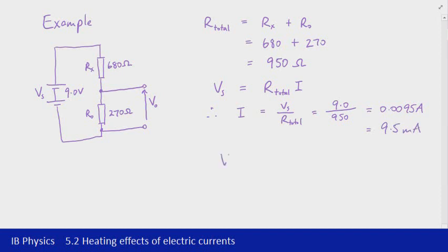The output voltage then, we can use Ohm's law again, just looking at the output resistance and the current that flows through it. So that's going to be 270 multiplied by 0.0095, and that gives us an output voltage of 2.6 volts. So the secondary circuit that we would connect to V0 would be operating off a voltage of about 2.6 volts.